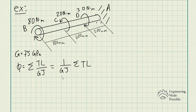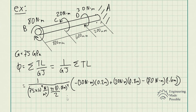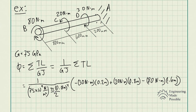Plugging in all the values: 1 divided by the shear modulus, which is 75 times 10 to the 9th newtons per meter squared — converting gigapascals to pascals to simplify units. The polar moment of inertia is pi times the radius to the fourth power divided by 2, where the radius is 0.01 meters (10 millimeters) to the fourth power. Then we proceed to compute the sum of the torques times the lengths.